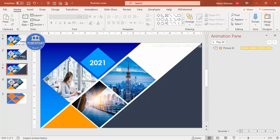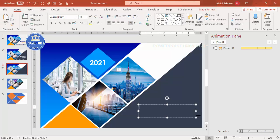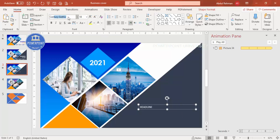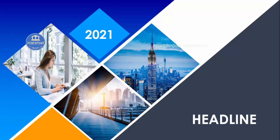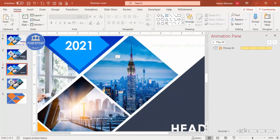Once the animation is done, it's time to add text effects. Go to Insert > Text Box and add a headline. Use a white font with a good bold font of your choice, increase the size, right-align it, and position it on the slide. You can also add subtitles and more detail text.